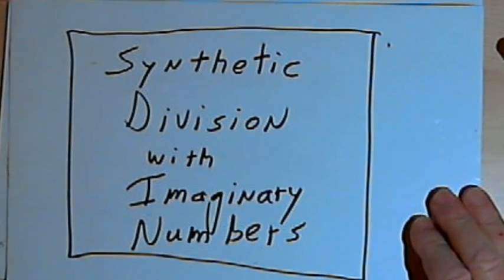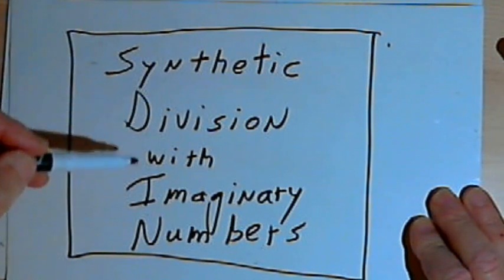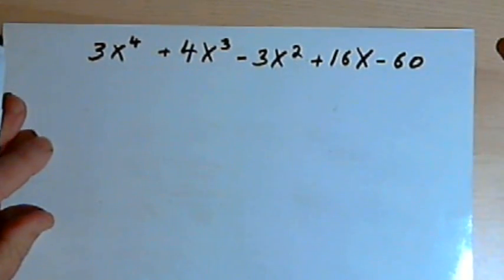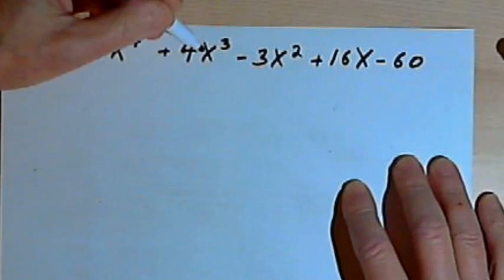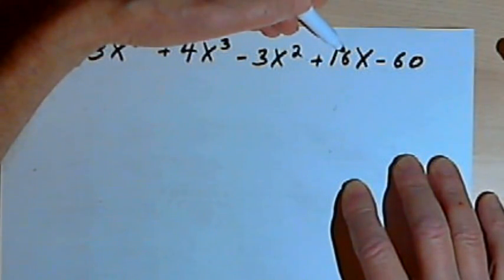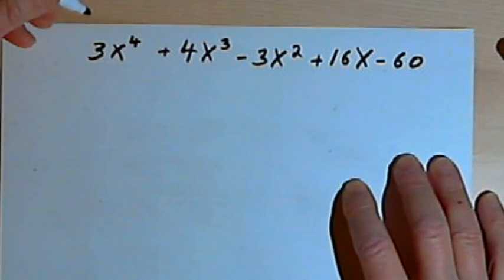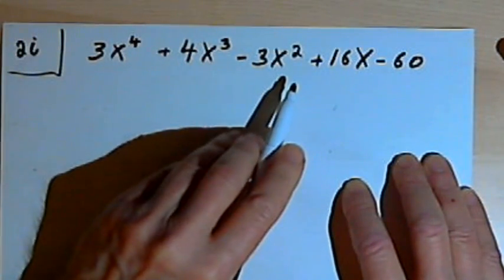This video is provided as supplementary material for courses taught at Howard Community College. In this video I want to demonstrate how to do synthetic division with imaginary numbers. So let's say you're given a problem like this. You're given this polynomial, 3x to the fourth plus 4x to the third minus 3x squared plus 16x minus 60.